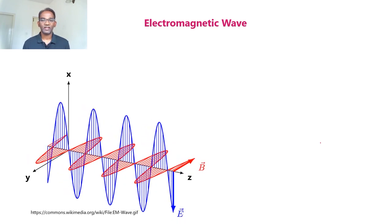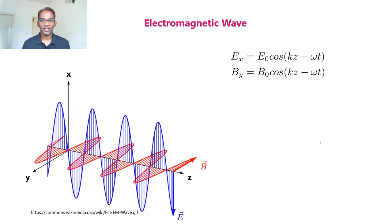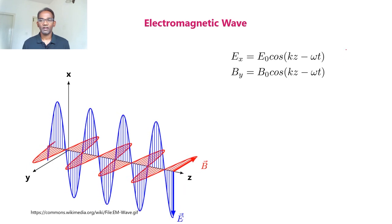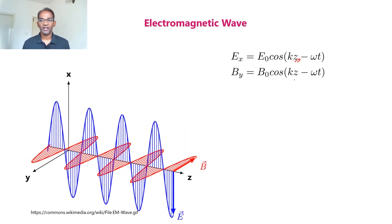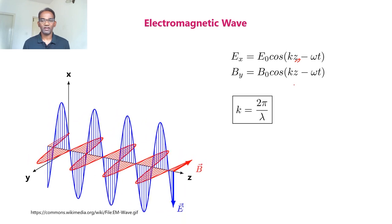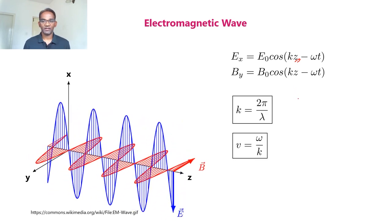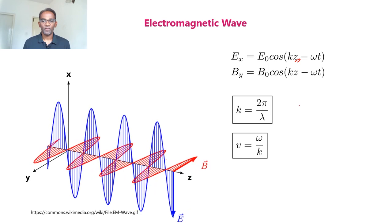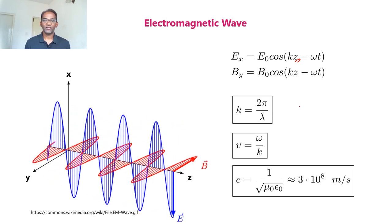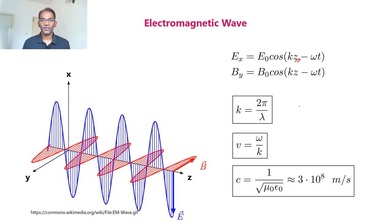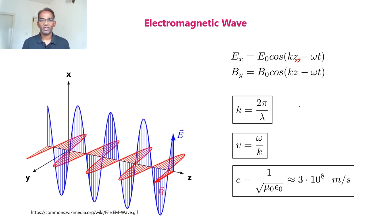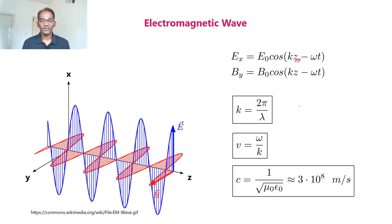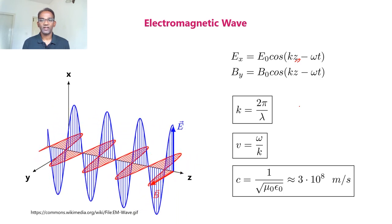In this figure, the electric field is directed along the x direction and the magnetic field is directed along the y direction. Z is the direction of propagation, and k is the wave number which is 2π divided by lambda. The velocity of propagation is given by v equal to omega divided by k. Maxwell also predicted that electromagnetic waves travel in vacuum with a velocity c equal to 1 divided by the square root of mu zero epsilon zero, which is approximately equal to 3 times 10 to the power 8 meters per second.